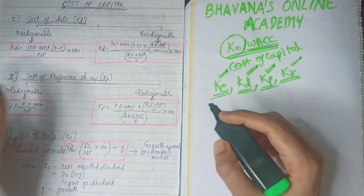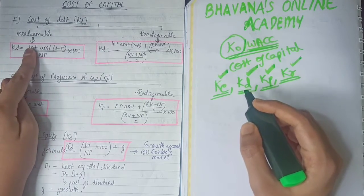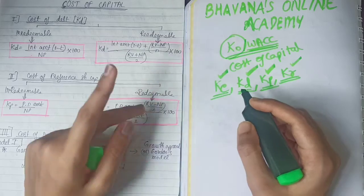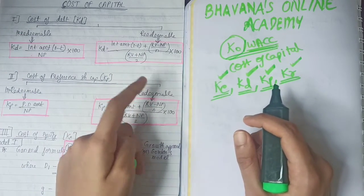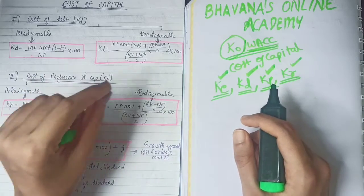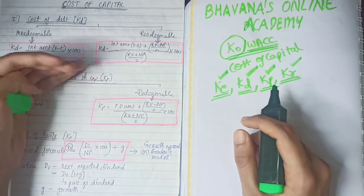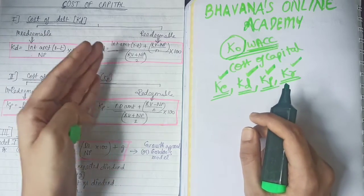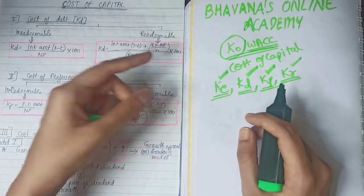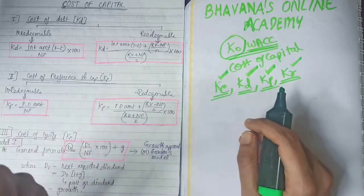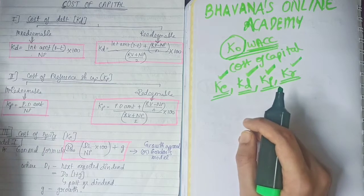We'll start individually with KD — cost of debt. Your debt can be either irredeemable or redeemable. In the question, how will you find whether it is irredeemable or redeemable? If they give you a hint like the debt will mature within so many years, or the maturity period is 5 years or 10 years, then it is redeemable. If no such statement is given, we assume the debt is irredeemable.